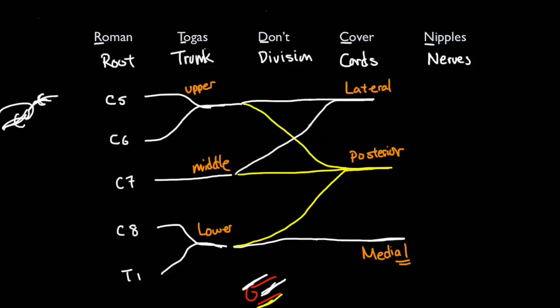Finally, these are going to split off into their respective nerves. The posterior splits into a radial nerve and also an axillary nerve.